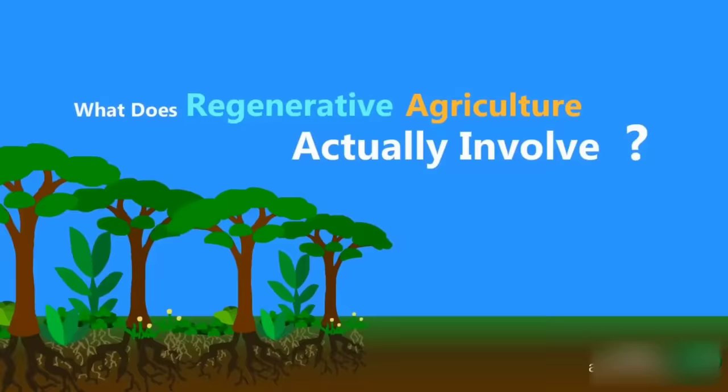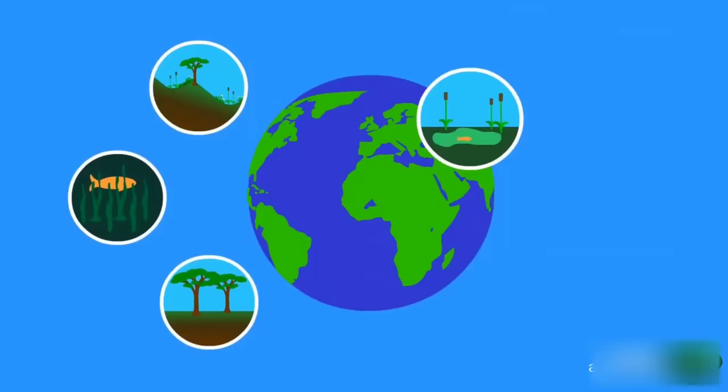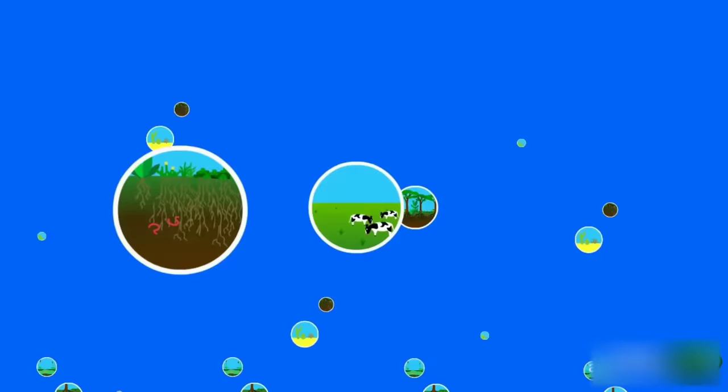So what does regenerative agriculture actually involve? Answering this question is actually pretty tricky, because the practices that work best largely depend on the land that's being worked with. So the variety of different practices border on infinity, a bit more than this video can cover. However, let's look at three common forms that regenerative agriculture can take.